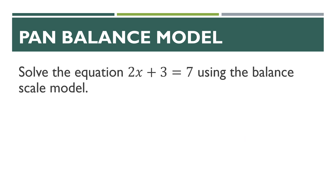Let's use the pan balance model to solve the equation two X plus three equals seven. We are using a rectangle to represent the variable X and an oval to represent the unit one.